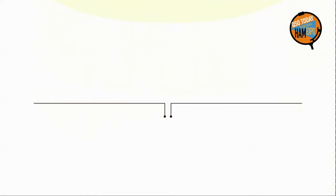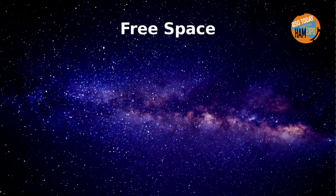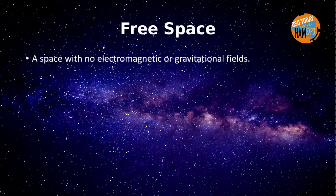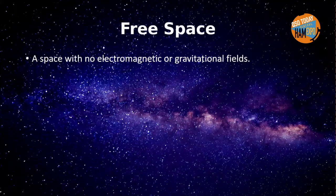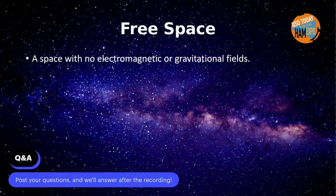I mentioned that an antenna is an impedance matching device, matching the output impedance of your transmitter to the input impedance of free space. That term 'free space' is one you'll run into a lot in the world of antennas. Technically, free space is a space with no electromagnetic or gravitational fields. In other words, something like the isotropic antenna — it's something that doesn't exist, but is useful for doing the engineering math.